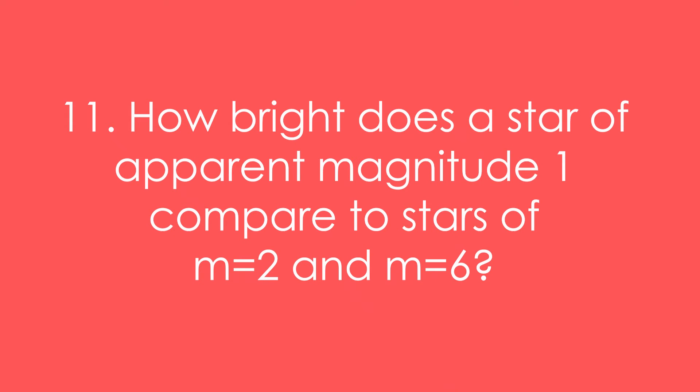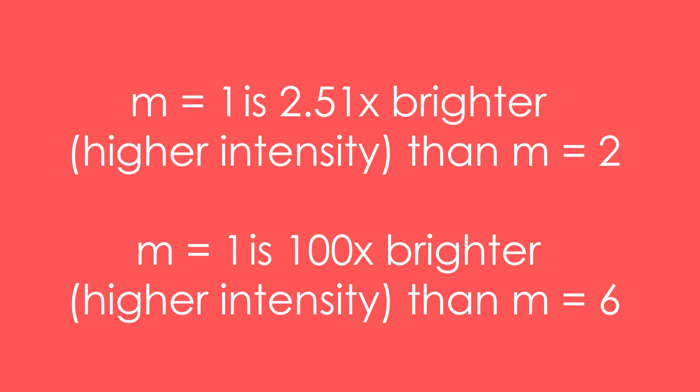Question 11: How bright does a star of apparent magnitude 1 compared to stars of apparent magnitude 2 and 6? A star that has an M of 1 is going to be 2.51 times brighter than M equals 2 and that's because the scale is based from 1 to 6 where M1 is 100 times brighter than M6. It's a logarithmic scale.